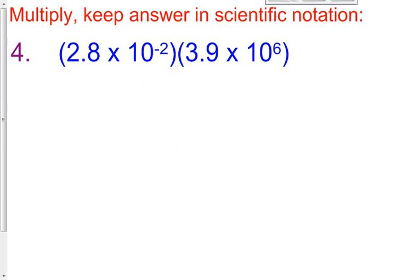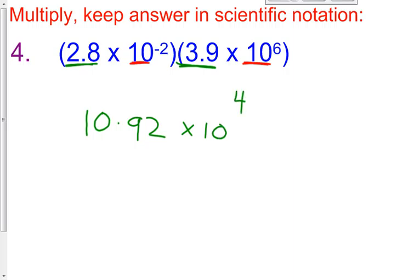Number 4 — pause the video and try this one on your own, then restart to check your answer. So I have 2.8 multiplied by 3.9. I multiply the coefficients together and get 10.92. Then with a common base of 10 on both sides, I add the exponents: negative 2 plus 6 is positive 4. So I have 10.92 times 10 raised to the 4th power.